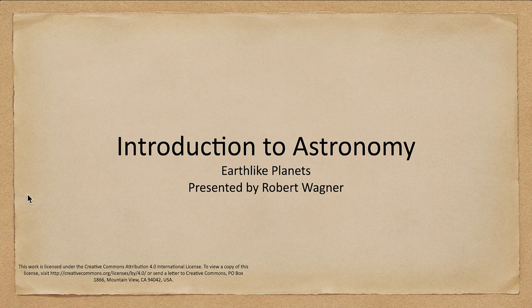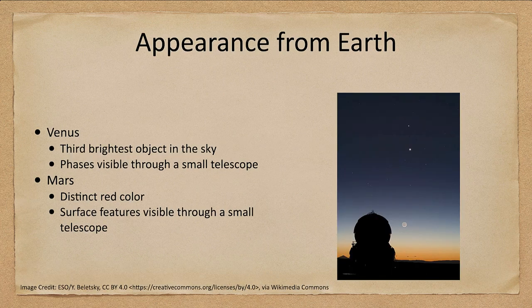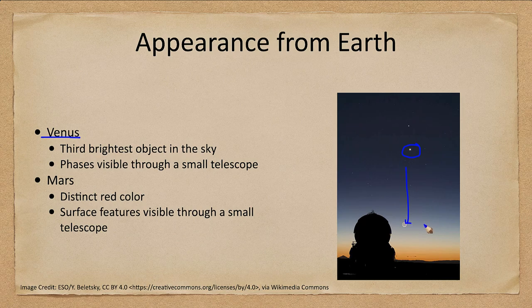So what do we know about these planets? Let's start off with what we can see from Earth. Venus is the third brightest object in the sky, and we see it here in the central part of this image. The next brightest object in the sky down below would be the full moon, and of course the brightest object would be the Sun.